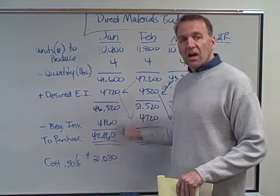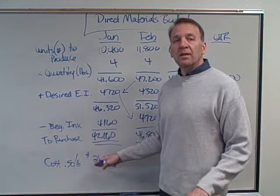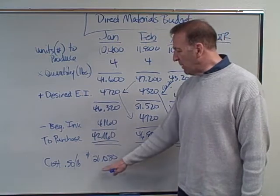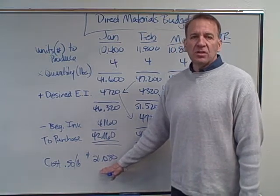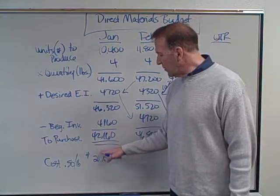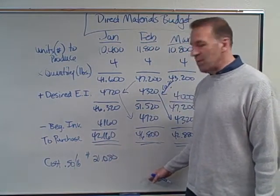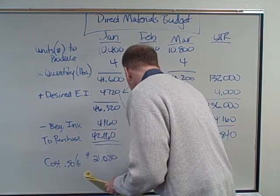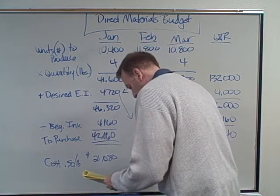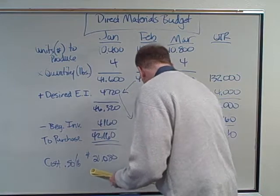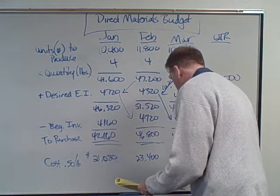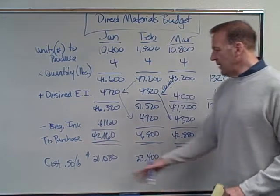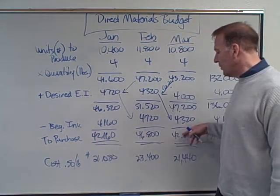That's the cost but may not be the cash paid in January — more than likely we buy on account with accounts payable due in 30 days, so cash goes out the following month. February's purchase cost is 46,800 times $0.50 equals $23,400. March's is 42,880 times $0.50 equals $21,440. These are dollar costs — 50 cents per pound applied to each month's pounds.